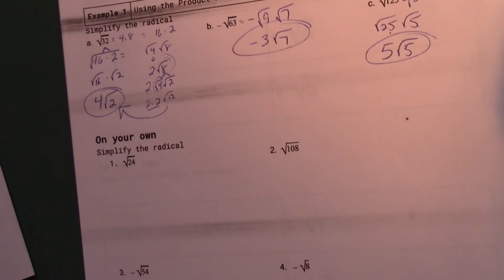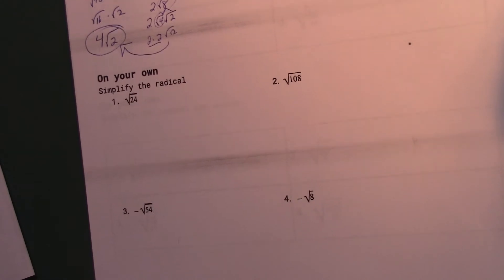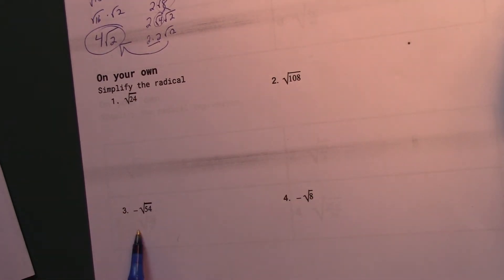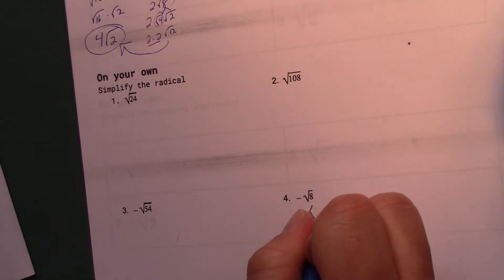So maybe press pause a second and try and work through these 4 at the bottom here. This is square root of 24, square root of 108, negative square root of 54, and negative square root of 8. And this one I kind of just gave away a second ago. Press pause, try those out. Come back and check.